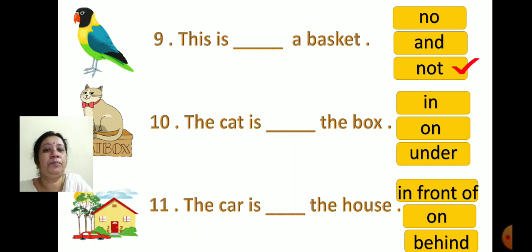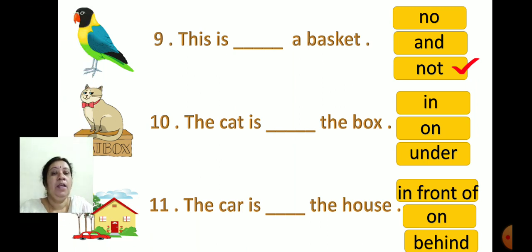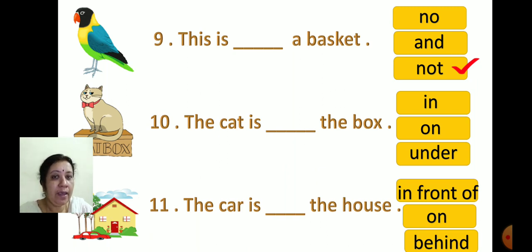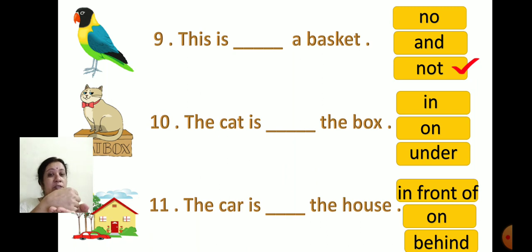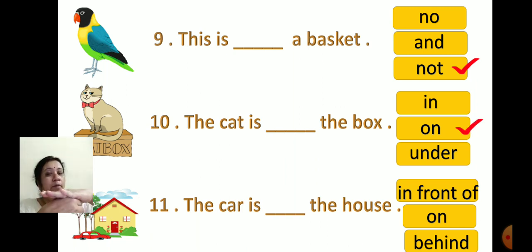Now see the next picture. Read: 'The cat is dash the box.' The options are In, On, and Under. 'In' means inside, 'on' means on top, 'under' means below. In the picture, where is the cat? Yes — on the box. The cat is sitting on the box; it is not inside. The correct option is 'on'.